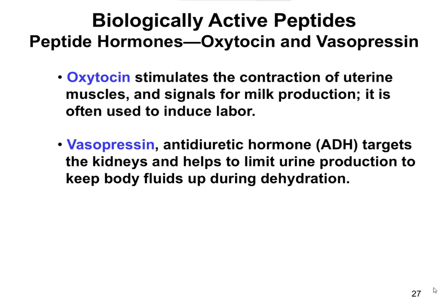Oxytocin is involved in pregnancy and childbirth — it's important for the contraction of uterine muscles and signals milk production. It's the chemical often given to induce labor. Vasopressin, differing by only two amino acids, is an antidiuretic hormone that limits urine production in the kidneys, helping keep body fluids up during periods of dehydration. The key point is that these are two completely different chemicals in terms of their functional properties, despite very similar chemical structures. Small changes in the amino acid sequence of a peptide can have a big difference in its functional role.